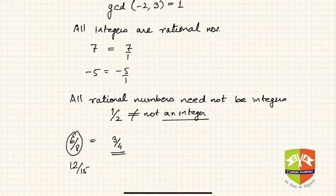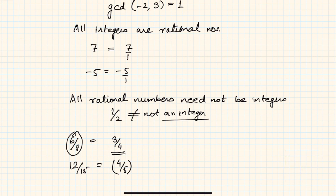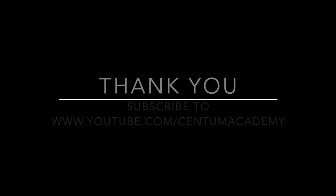Similarly, 12 upon 15 can be written as 4 upon 5, which is now a proper rational number. Please bear these three criteria in mind — they will be used multiple times for various concepts and problem solving.